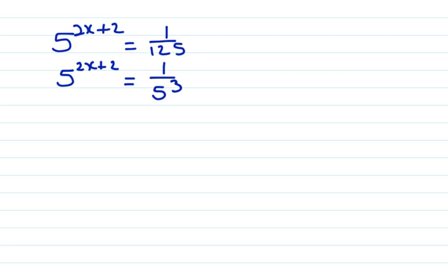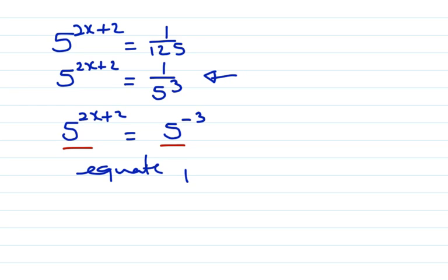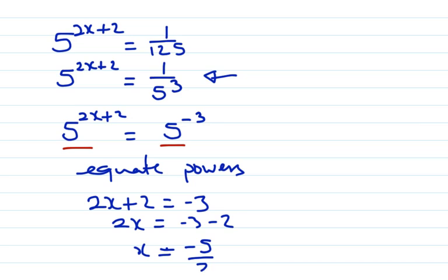Now it still doesn't look the way I like it. So I'm going to go on another law of indices here, and say that what I'm going to have is, if I reciprocate this, I get 5 to the power minus 3. So reciprocating makes the power negative. Now, I've got the same base. Very easy now to equate powers. And it's quite easy now to see. I'm going to get 2x plus 2 is equal to minus 3. And then I can start the solving process. So x is equal to minus 5 divided by 2.